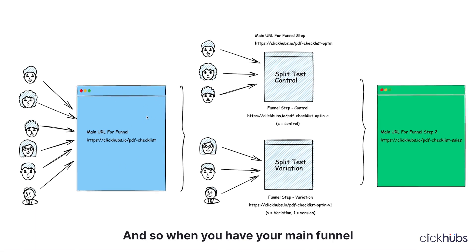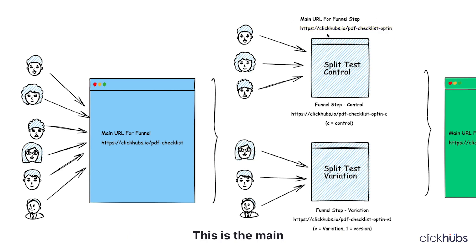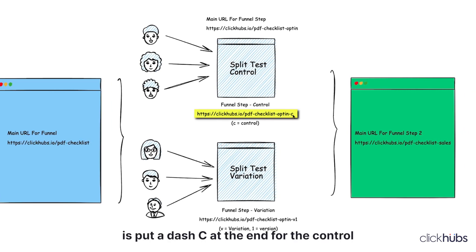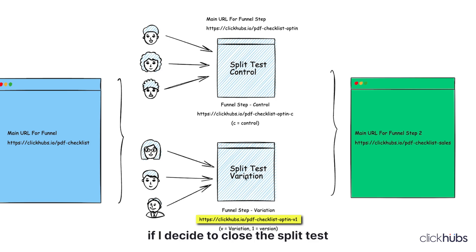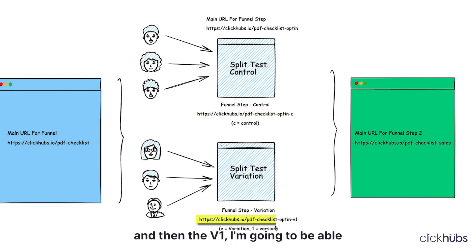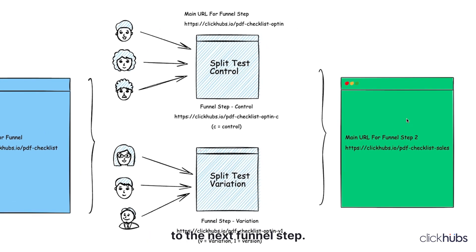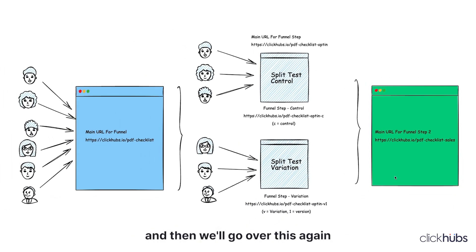When you have your main funnel step, it's going to have your main URL — in this case clickhubs.io/pdf-checklist-opt-in. This is the main URL for this funnel step. Within this funnel step we may have two different variations. What I like to do is put a dash-C at the end for the control and a dash-V at the end for the variation — so dash-V1 for the first variation. If I close that split test and create another, I'll call it V2. The control is always going to be C, and the V-number lets me track different split tests over time. When people opt in on one or the other, it takes them to the next funnel step — in this case, pdf-checklist-sales, which is step two. Let's hop back into ClickHubs and go over this again.